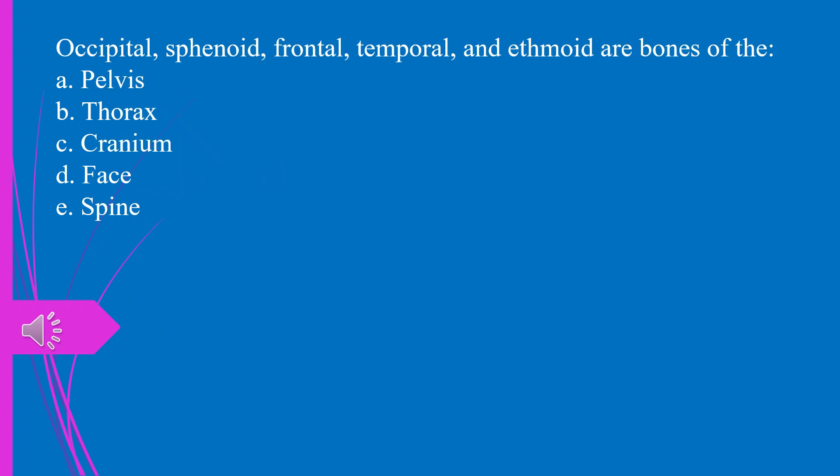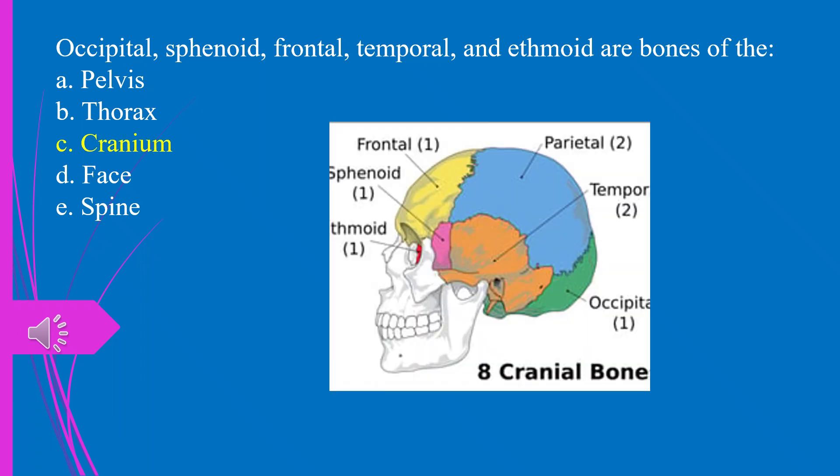Question 7. Occipital, sphenoid, frontal, temporal, and ethmoid are bones of the: a) pelvis, b) thorax, c) cranium, d) face, e) spine. The answer is c, cranium.